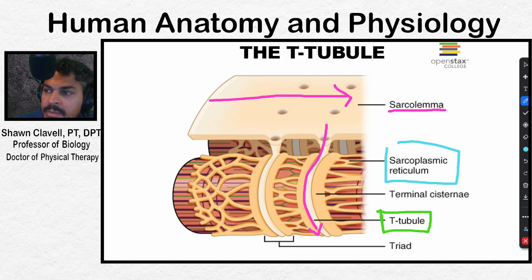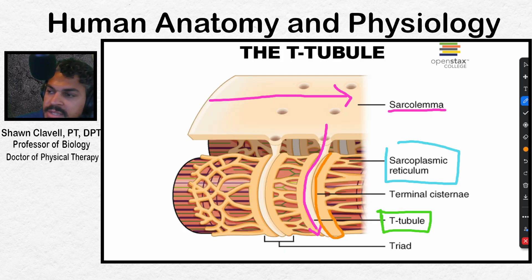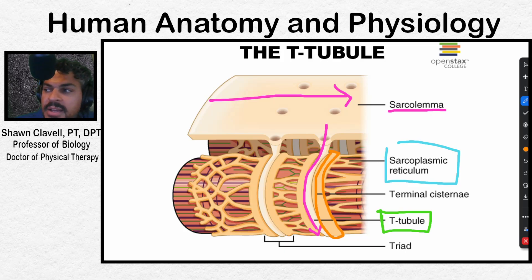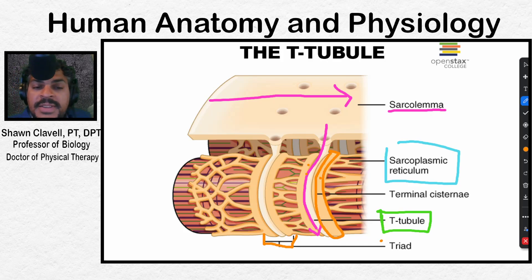Where the sarcoplasmic reticulum meets the T-tubule is called the terminal cisternae. Remember that the sarcoplasmic reticulum houses calcium ions. When you have a terminal cisternae, a T-tubule, and another terminal cisternae, that three-part structure is referred to as a triad — two components of the sarcoplasmic reticulum on either end and the T-tubule in the middle.